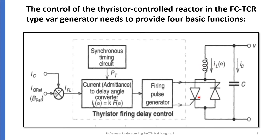The firing pulse generator gives us the firing pulse required. We have a current to delay angle converter that converts the required current into a delay angle. It tells us what should be the delay angle for the required current.